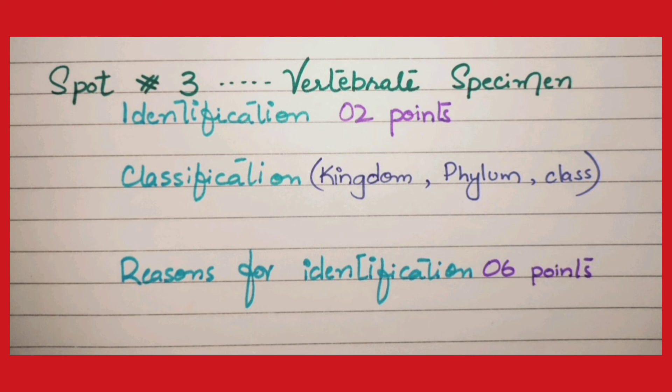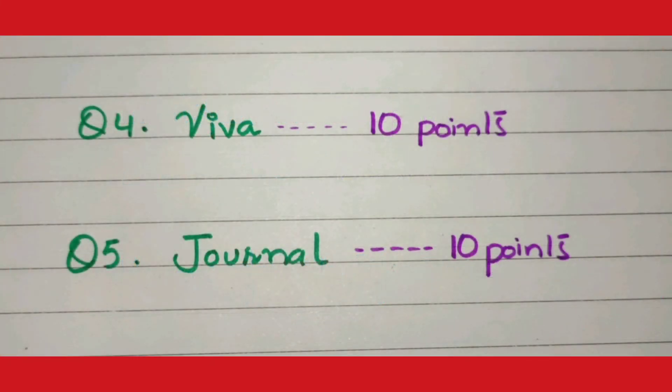To clarify: in spot number one, you have to draw a diagram since a slide is given. In spots number two and three, there is no need to draw a diagram. For spots two and three, make sure to write five proper reasons of identification. In spot number one, only three reasons of identification are needed because you are also drawing the diagram and writing the identification.